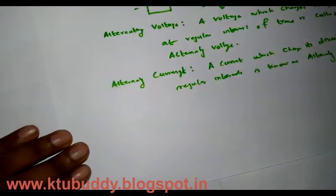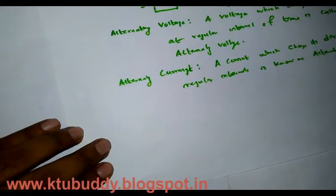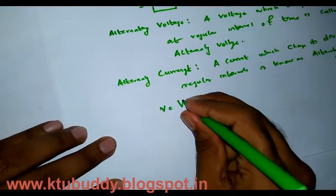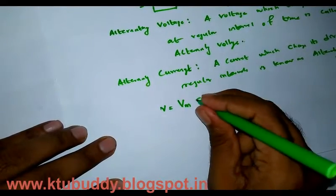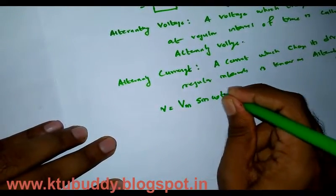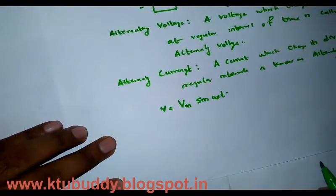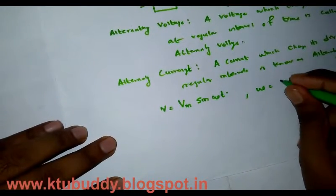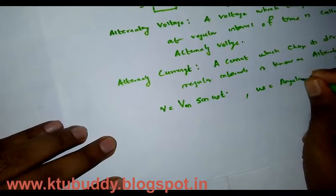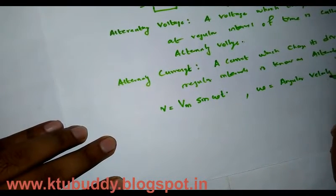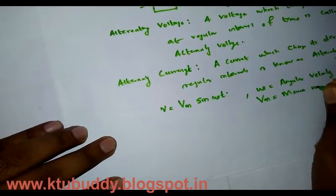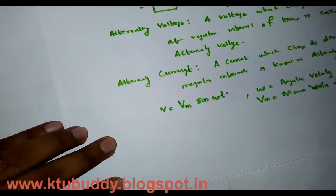We can represent the equations for sinusoidal voltage and current. The instantaneous voltage V is represented by V = Vm × sin(ωt), where omega (ω) is the angular velocity of the coil and Vm is the maximum value of AC voltage.